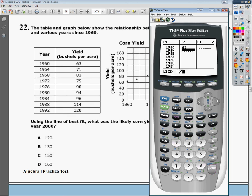So you get 63, 71, 83—and be careful to make sure that things are matching up appropriately. Like if I just typed in 90, it should be across from 76, and it is. 94, 96, 114, and 120.